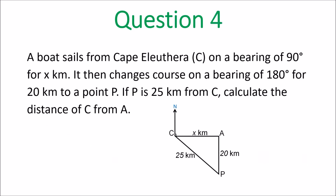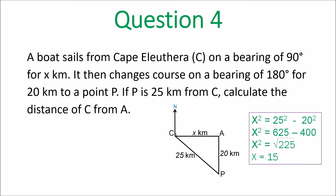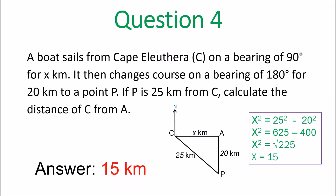Question 4 — a question on bearings. You have to use Pythagoras' theorem. So x squared equals 25 squared minus 20 squared, and x squared equals the square root of 225, giving 15 kilometers.